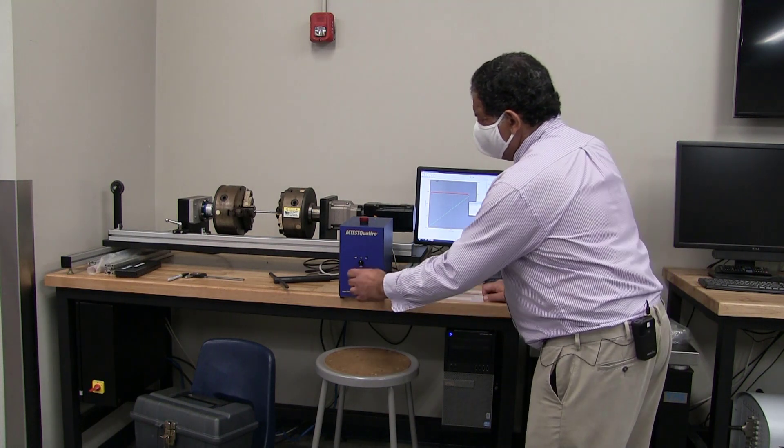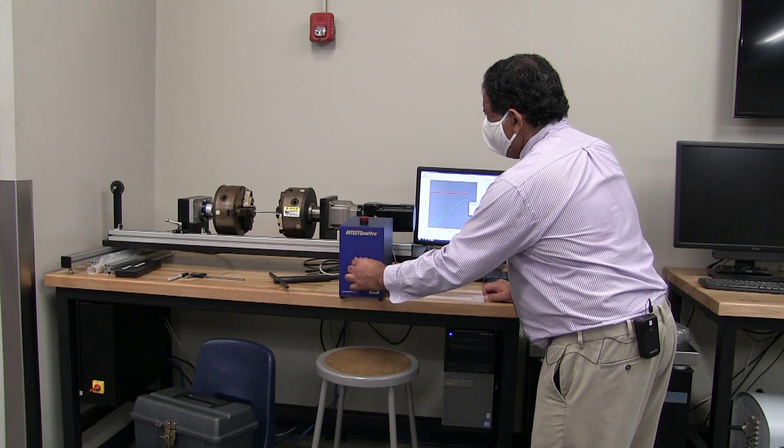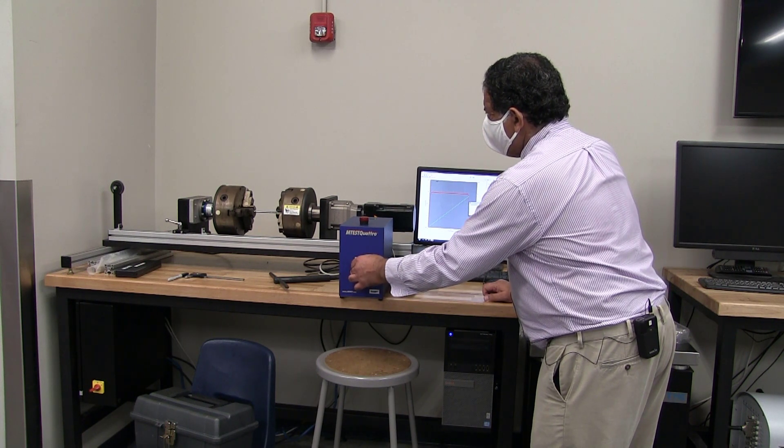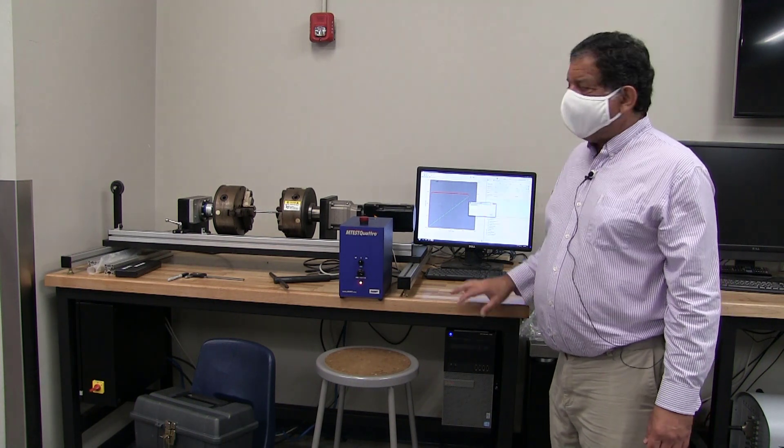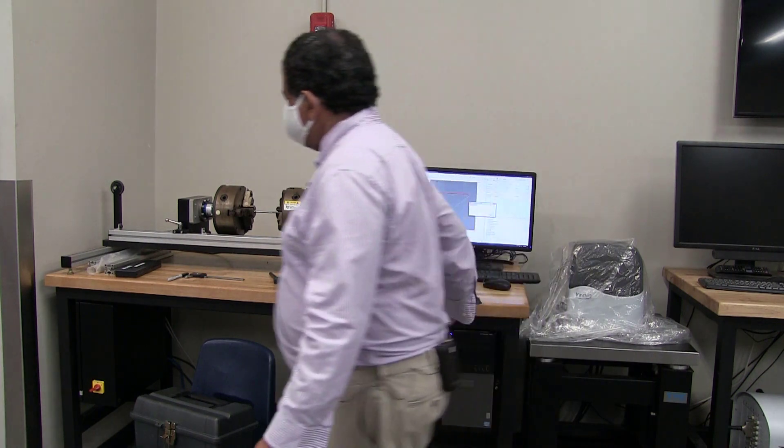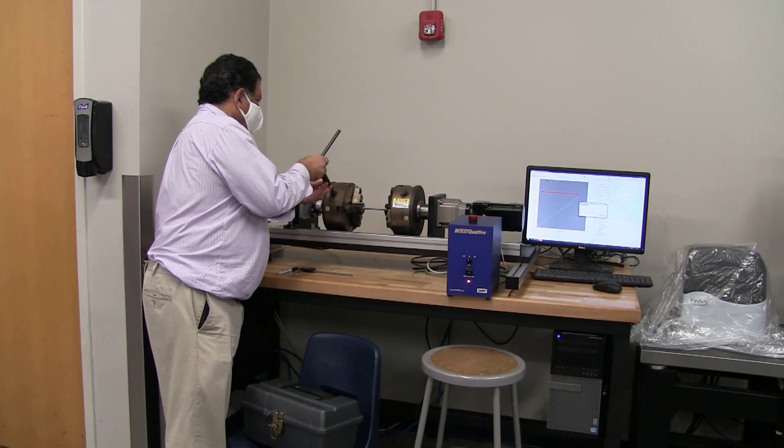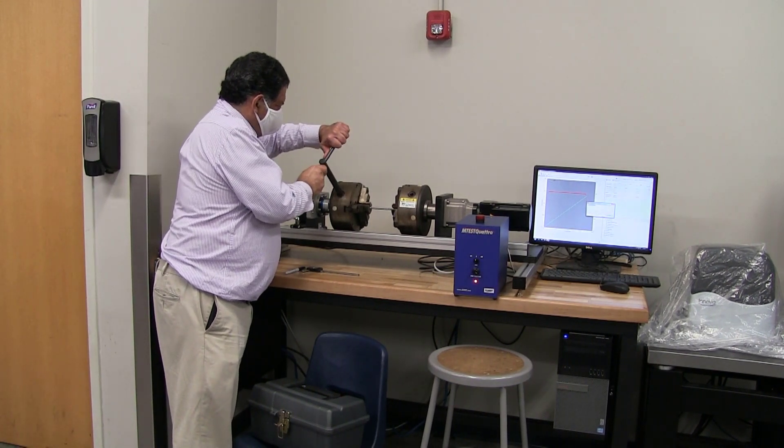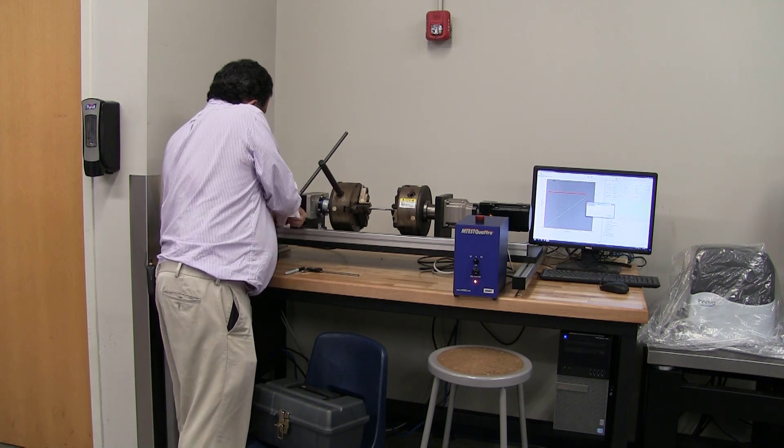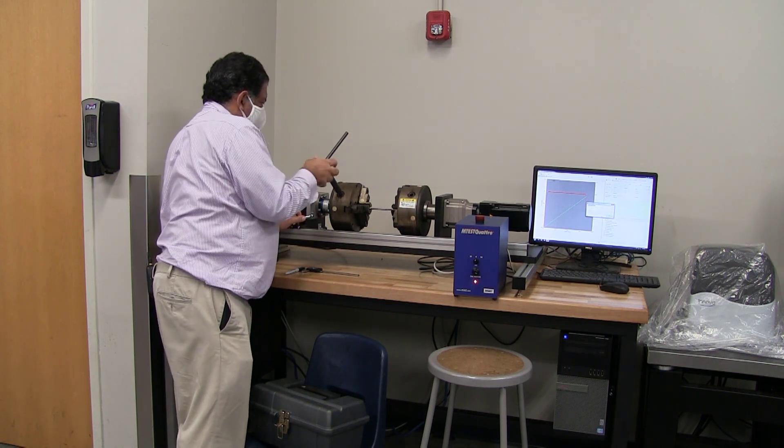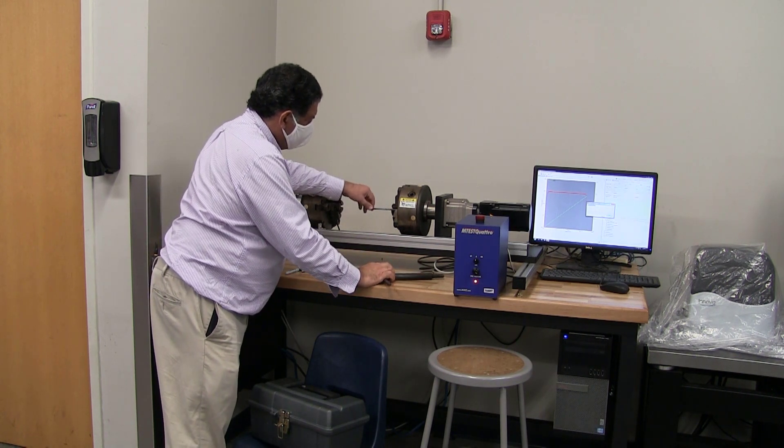Now, what I'm going to do is I'm going to continue to rotate it. There. Now, you heard that little click. That was when the last little ligament let go. So now, when I unload the specimen and remove it, you're going to be able to see the fracture surface.